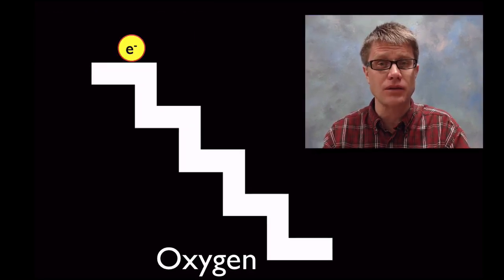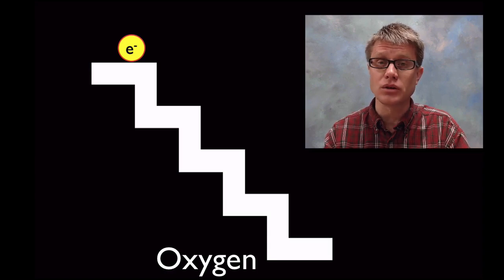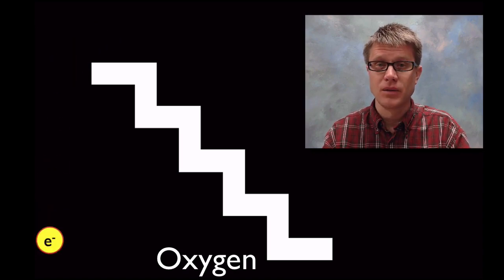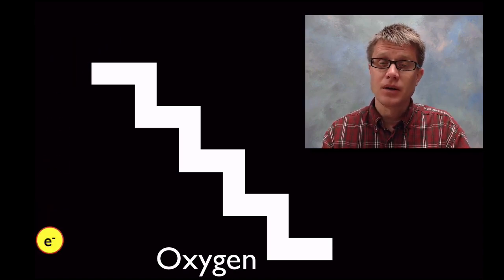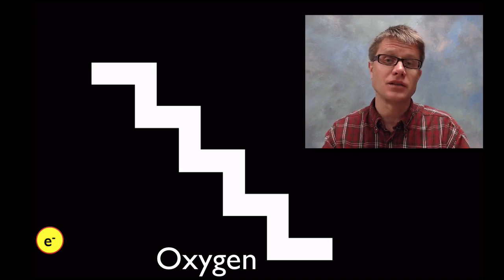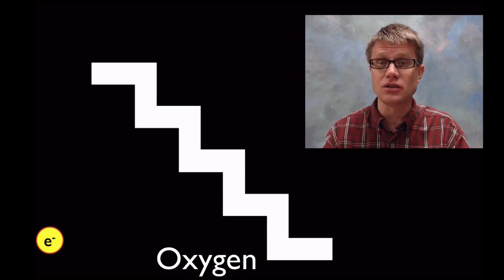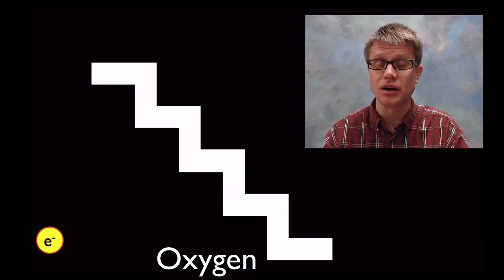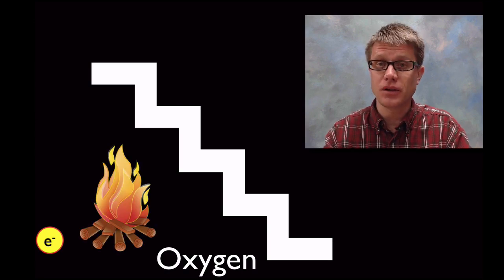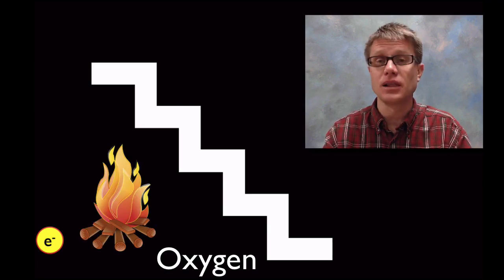Think of it like gravity. Oxygen is like gravity, pulling electrons towards it just like an object falls to earth when acted on by gravity. As that happens, the reactants in the chemical reaction — the paraffin wax and the oxygen — are going to have more potential energy in their chemical bonds than the products will. And so we release that energy, as in a flame, as heat and light.